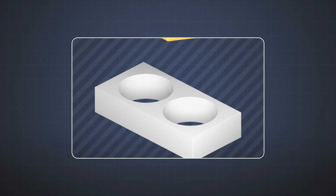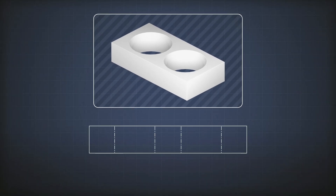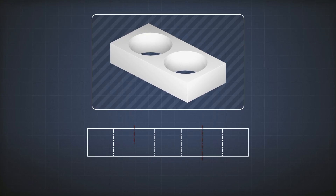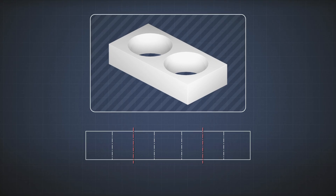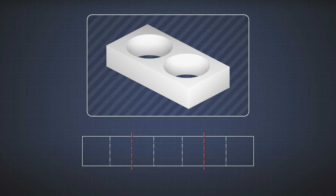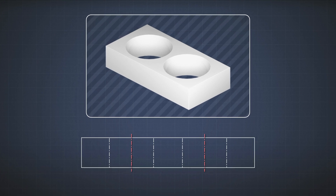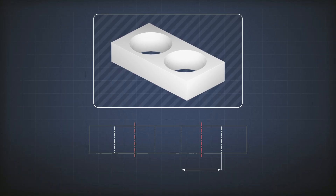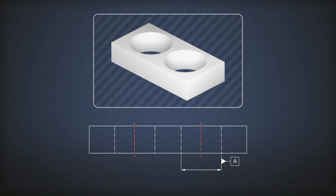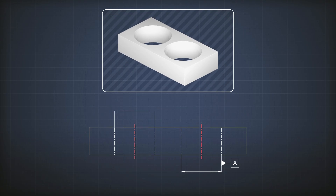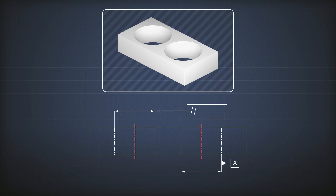I can also control the parallelism of a center line. Let's say we have this part — we're looking at a section view of a part with two holes, and I want to say that the center line of these two holes has to be parallel to the other. I have to start by pointing at the center line of one hole and naming it the reference. We point at center lines by pointing at the dimension line, so I name this reference A.